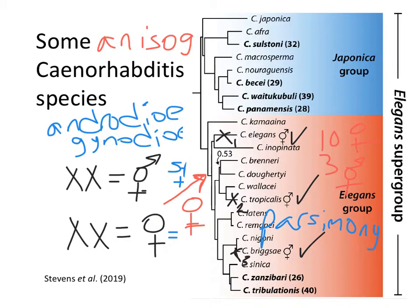The same is true for other sister pairs where one is male-female and one is male-hermaphrodite. C. tropicalis evolved mutation X2, and in C. briggsae — sister species of C. nigoni — there would be a third, separate evolution of hermaphroditism. The more people find Caenorhabditis nematodes, the more frequently they find hermaphrodites, so there may be more than just these three hermaphrodite species.